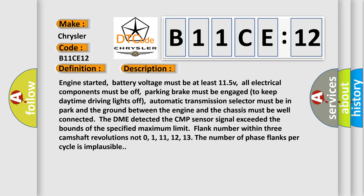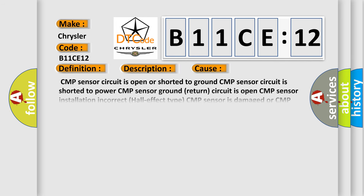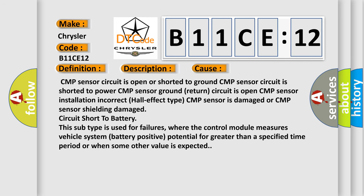CMP sensor circuit is open or shorted to ground. CMP sensor circuit is shorted to power. CMP sensor ground return circuit is open. CMP sensor installation incorrect (Hall-effect type). CMP sensor is damaged or CMP sensor shielding damaged.